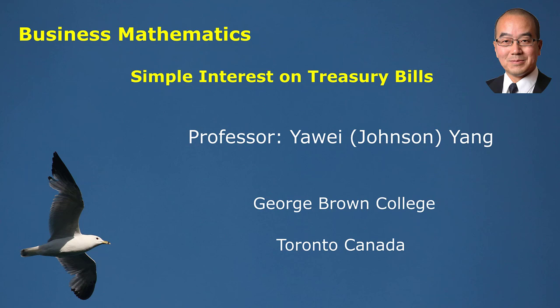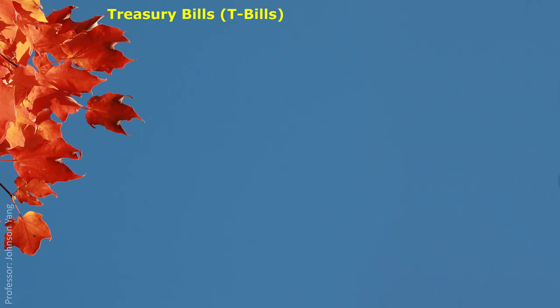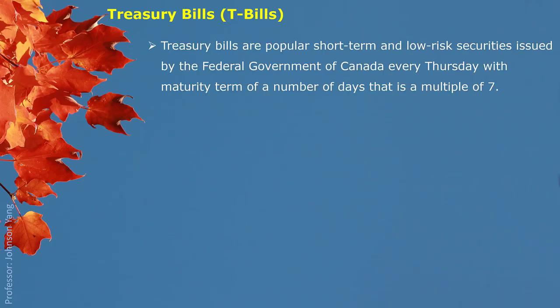Here we talk about some business applications where simple interest is applied. Treasury Bills are popular short-term and low-risk securities issued by the federal government of Canada every Thursday, with a maturity term of a number of days that is a multiple of seven. The Treasury Bill is issued only by the government and the term is normally counted by weeks.